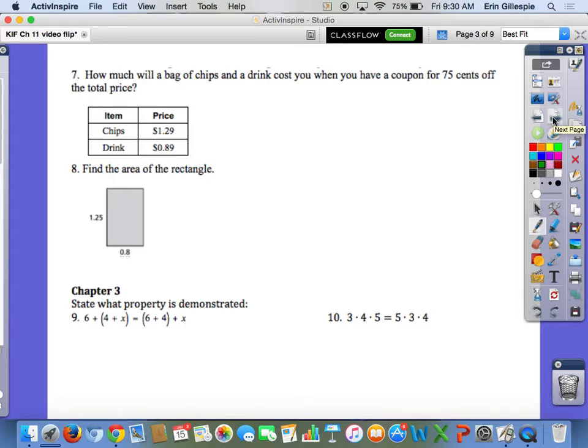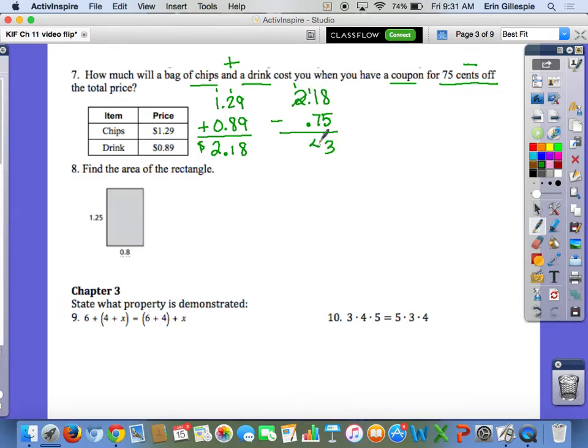Alright, go to your next page. Number 7 says, how much will a bag of chips and a drink cost you when you have a coupon for 75 cents off the total price? So this is a two-part problem. First, you need to figure out the chips and the drink together. What's that going to cost you? Well, that would be adding. So look over here at your table. Chips are $1.29, a drink's 89 cents. Remember, the key with decimals is to line up the decimals when you're adding. So 9 plus 9 will give you 18. Carry the 1. Bring the decimal down to the same spot that you lined it up in your original problem. So it's going to cost me $2.18 before I use my coupon. 75 cents off means I should subtract 75 cents from $2.18. So 75 cents would be like 0.75. Remember again to line up those decimals. So when we subtract, 8 minus 5 is 3. I can't take 7 away from 1, so I'm going to borrow. 11 minus 7 is 4. Bring down the decimal. So it's going to cost me $1.43 for those items.